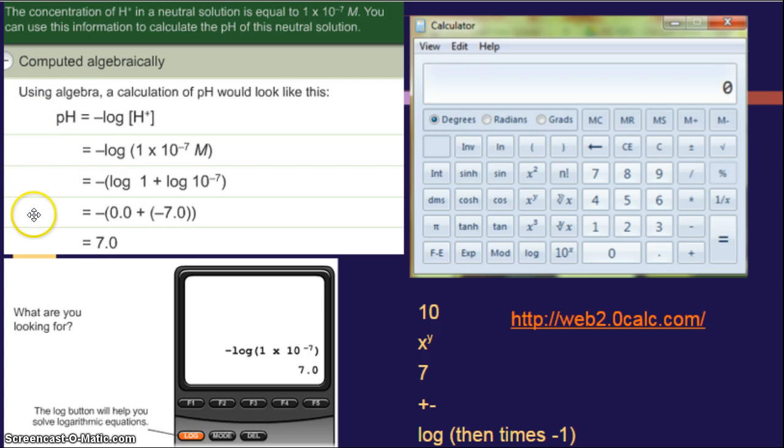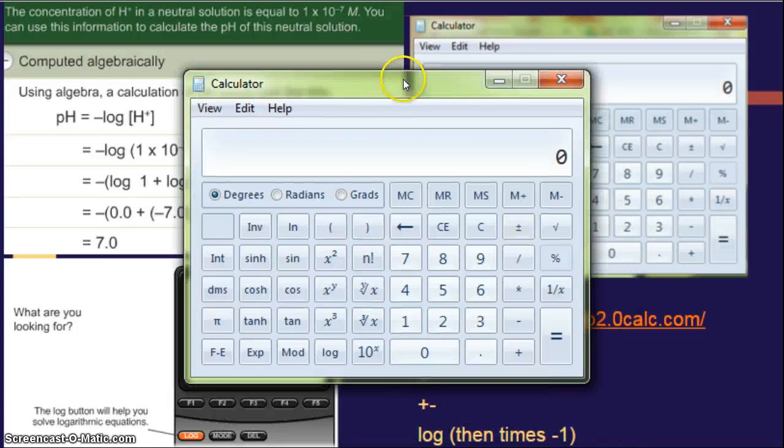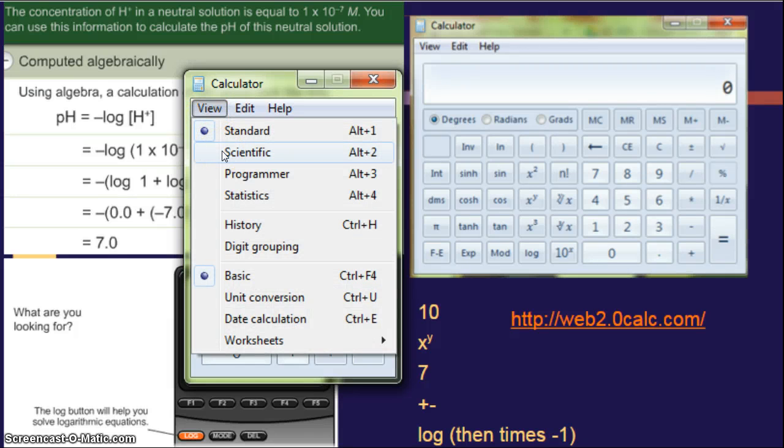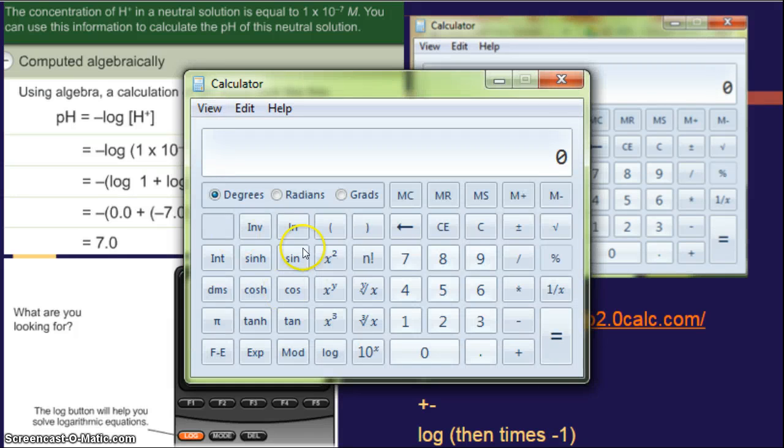So you can do it algebraically if you prefer. However, you can just put it in your calculator. You put the negative sign, then hit the log button. So there's actually a button that says L-O-G, parentheses, and it's 1 times 10 to the negative 7 would give you an answer of 7. Or if you have this kind of calculator on your computer, you can do it on there too, but it's kind of a funny set of steps. First of all, if your calculator looks like this and you're using it for chemistry, you have to change it to scientific. You need these buttons.